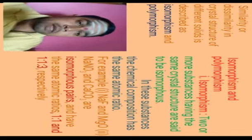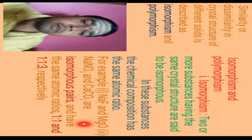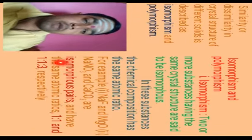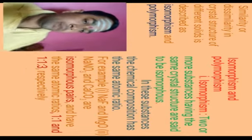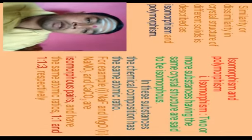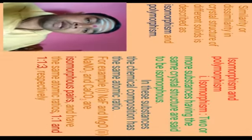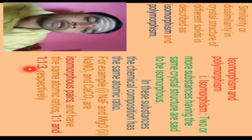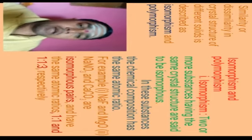For example, NaF (sodium fluoride) and MgO (magnesium oxide) are an isomorphous pair. A second example: NaNO₃ (sodium nitrate) and CaCO₃ (calcium carbonate) are isomorphous pairs. In NaF and MgO, the atomic ratio is 1:1. In NaNO₃ and CaCO₃, the atoms Na, N, O and Ca, C, O are in the ratio 1:1:3 respectively. This illustrates isomorphism.